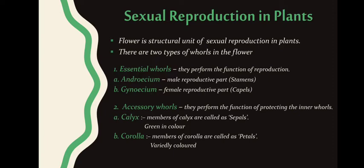Essential whorls are of two types: androecium, which is the male reproductive part, and the members of androecium are called stamens. The second is gynoecium — 'gyno' relates to women — so it is the female reproductive part, and the members of gynoecium are called carpels. Note there is a spelling correction: it is carpels.